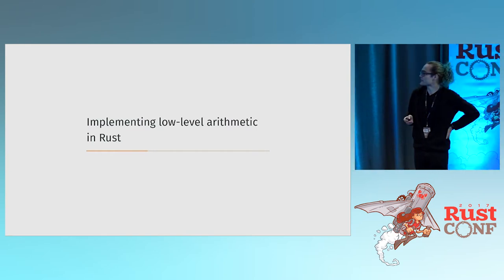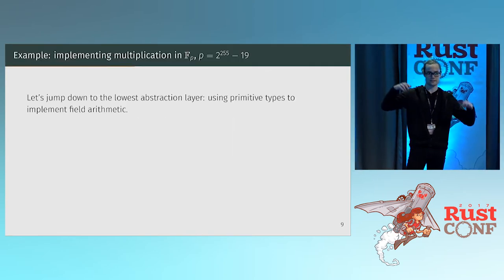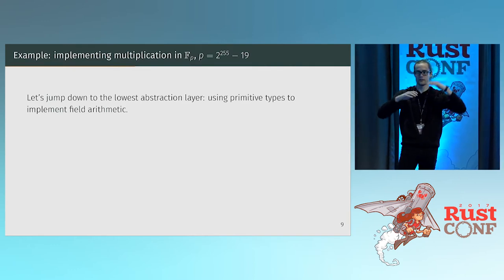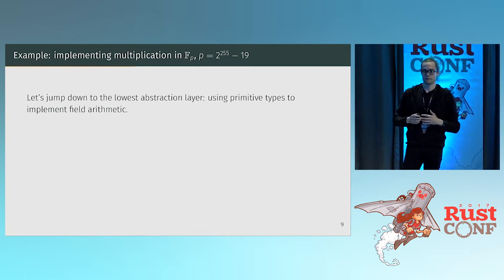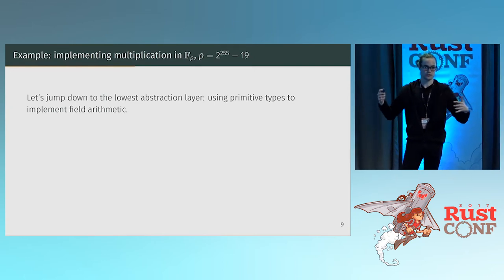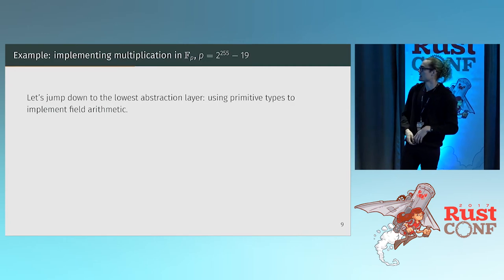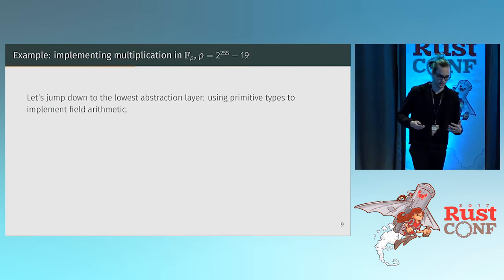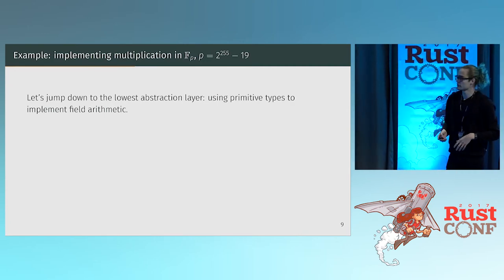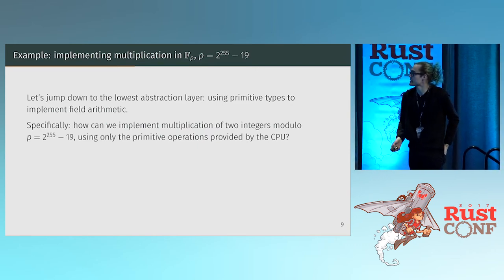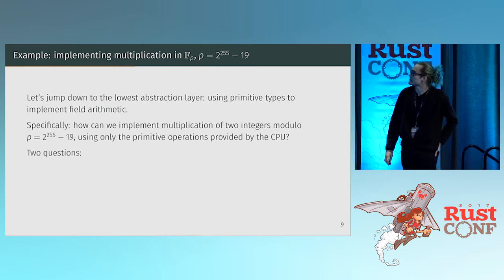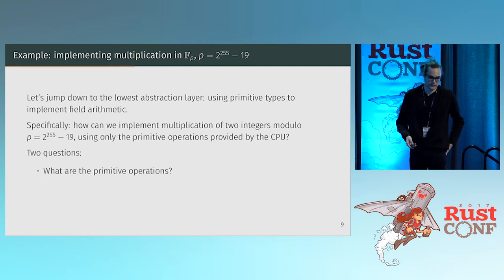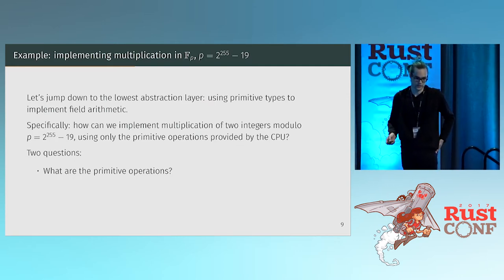So as you saw in one of the previous slides, there's a table of different pieces, and as an example we're going to go through one thing we do. We're going to look at how we implement field arithmetic for integers mod p, where p is 2^255 − 19, and as a worked example, let's see how that works.